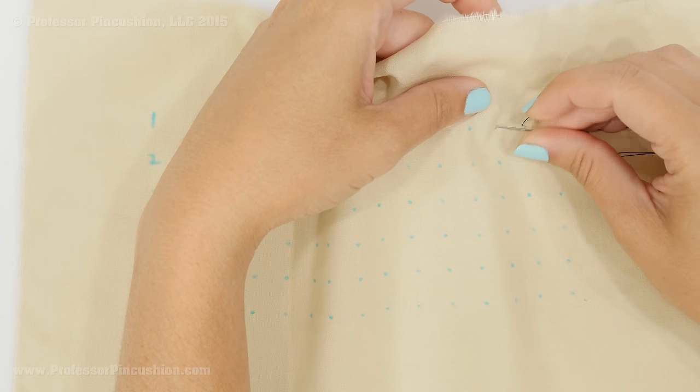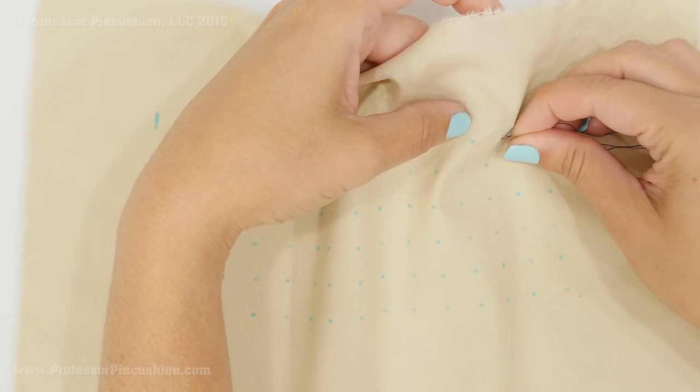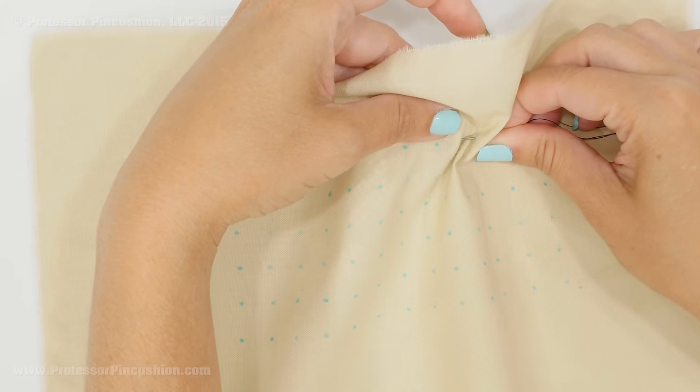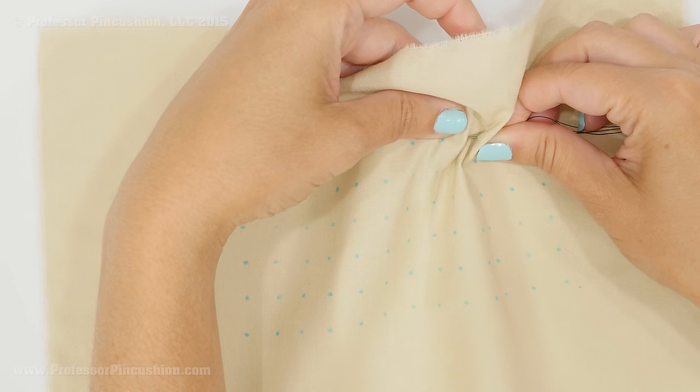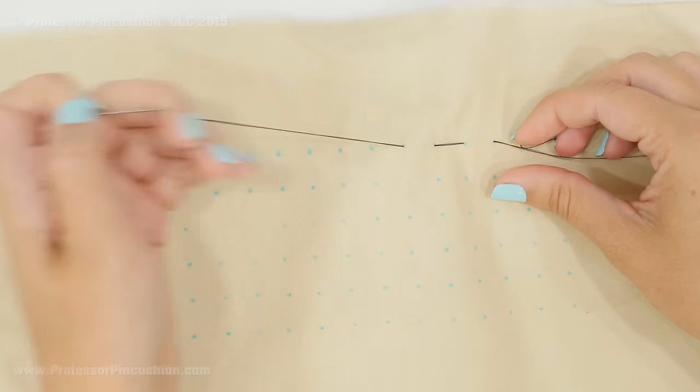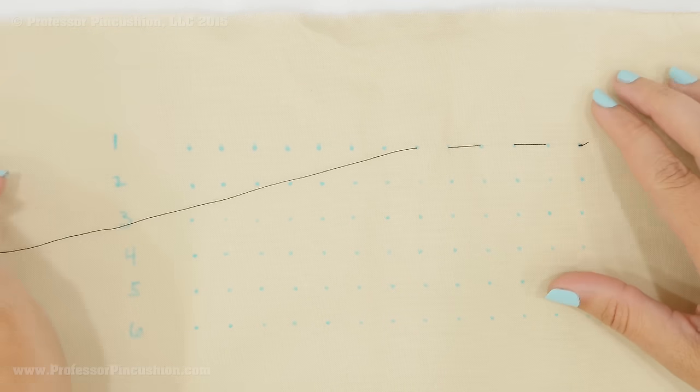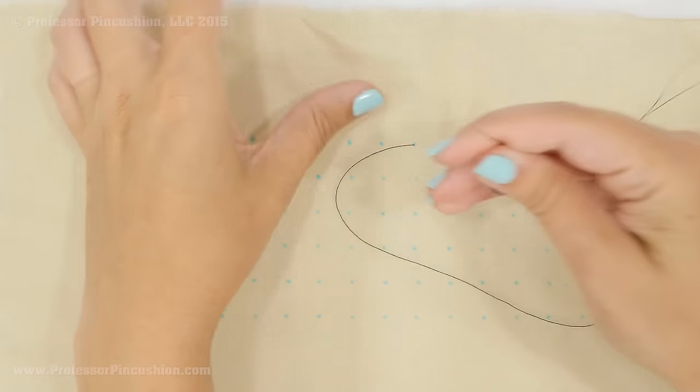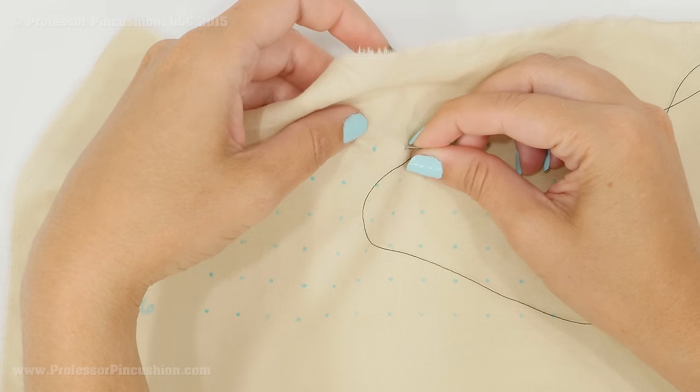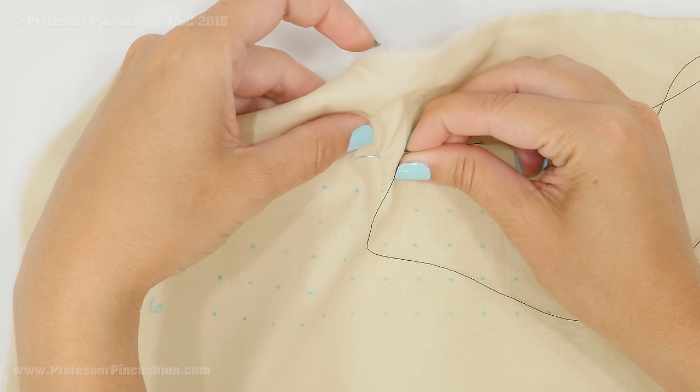So I'm going to come here, I'm going to go down through my first dot. Come back up through my second. And then I can just go ahead and pull this and just leave it flat. You don't have to do anything else. And then do that again. So down, up, and if you want to do faster, down, up. And you're just doing a basic running stitch.